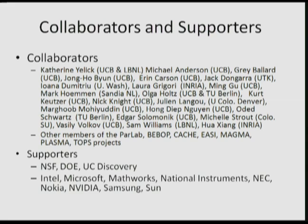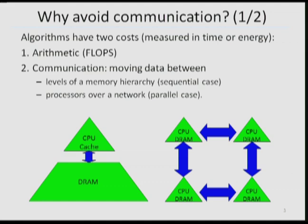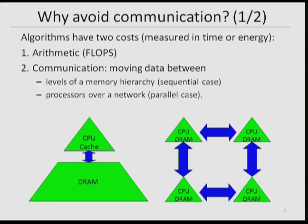The next two slides are motivation that should be very familiar to this audience. Algorithms have two costs, whether you measure them in time or energy: the arithmetic that they do, and the communication, which means moving data. I'm interested in minimizing that, whether it's moving data between levels of memory hierarchy, between all the different levels that may exist, or between moving data between processors over a network.